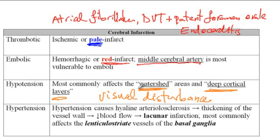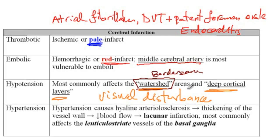What does watershed area mean? The watershed area is a region that is being supplied by two major arteries. Since it's a border zone between two different arteries, the perfusion in these areas is not really good. So once there is a problem with the blood supply — systemic hypoperfusion — the watershed areas are the first to be affected.